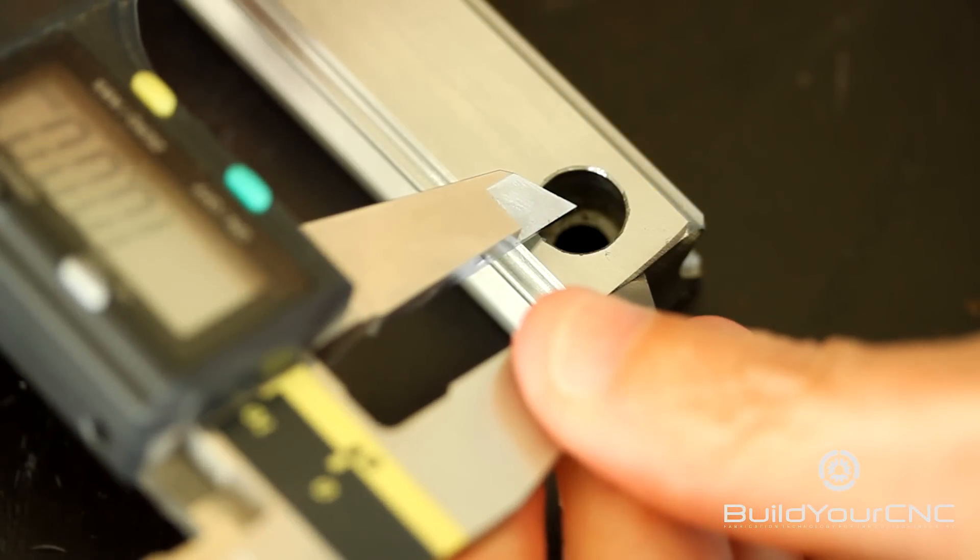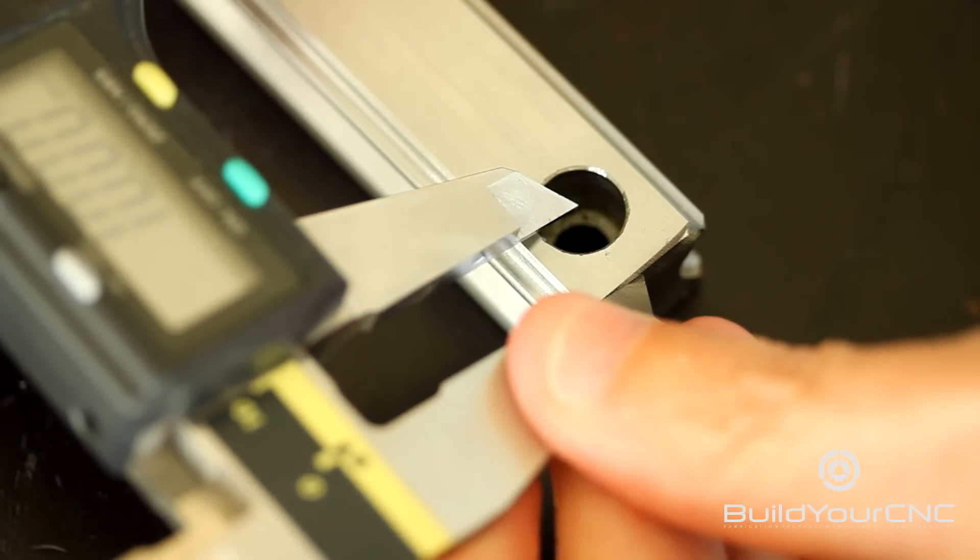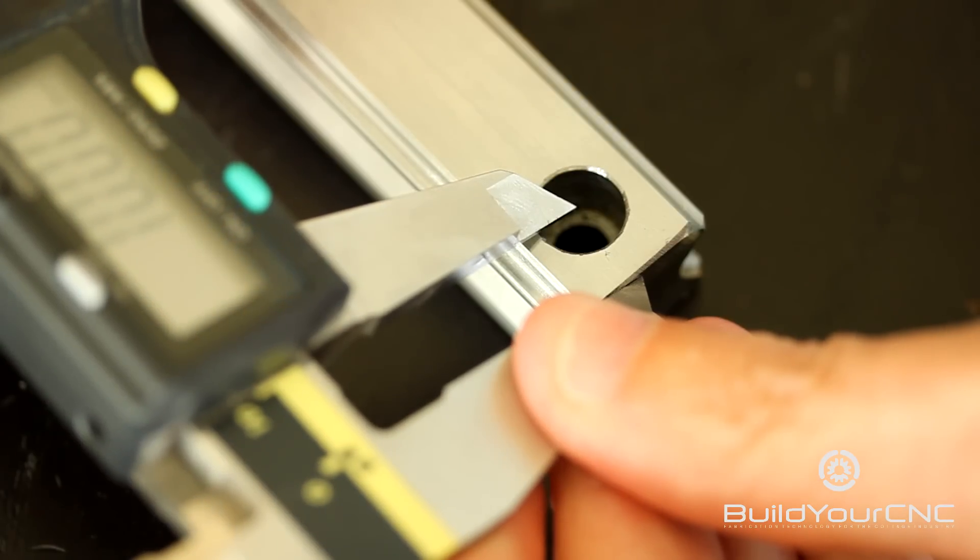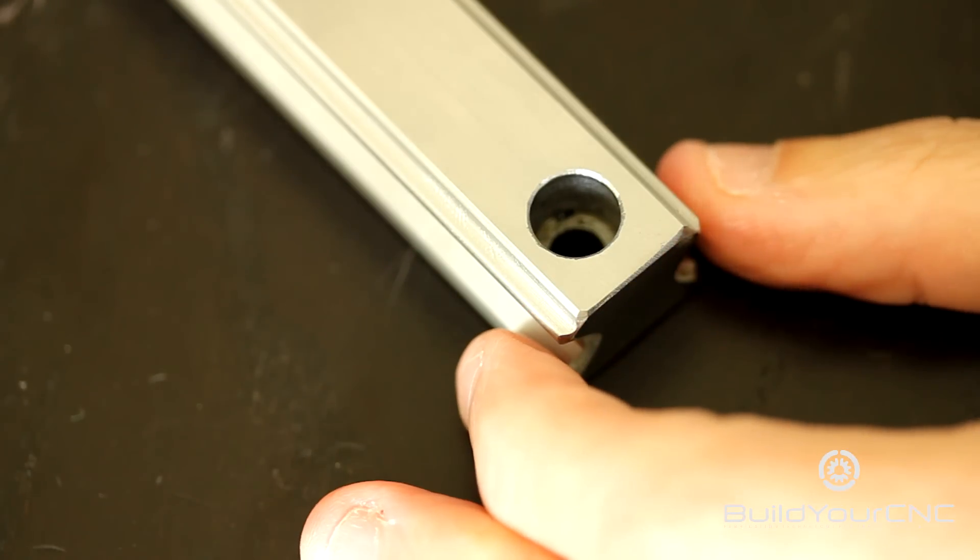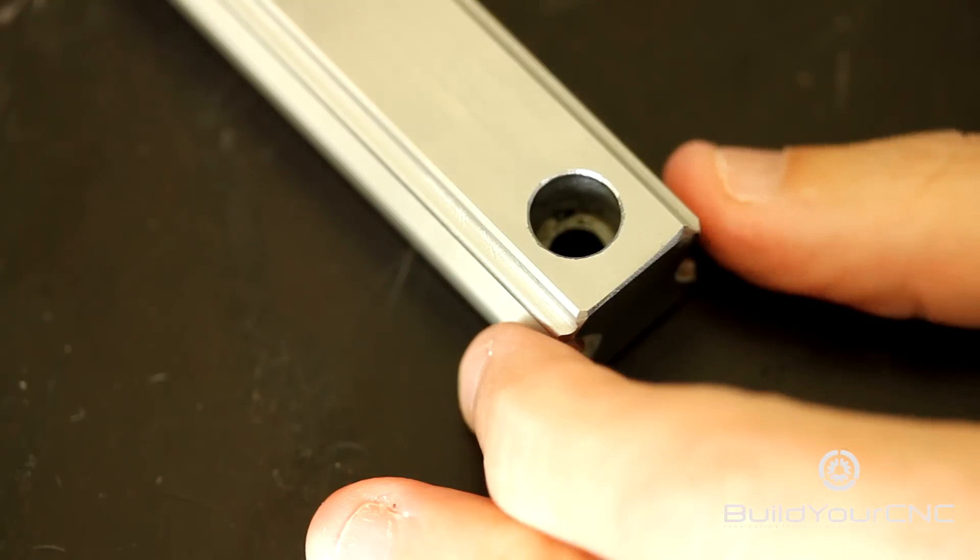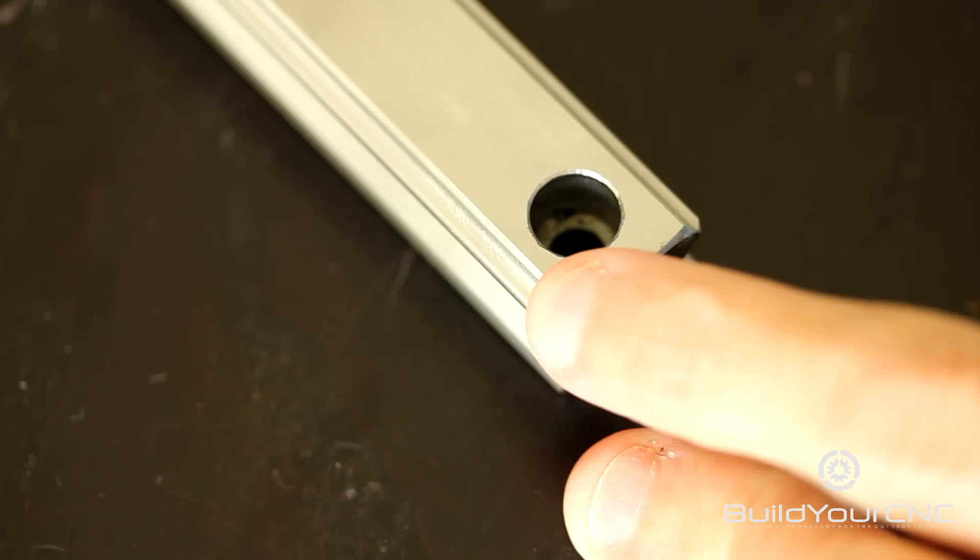The measurement from the edge to the first hole is 10mm if you have the uncut version. We sell this rail as a 2000mm full length or by the number of inches that you desire, less than 78.75 inches.